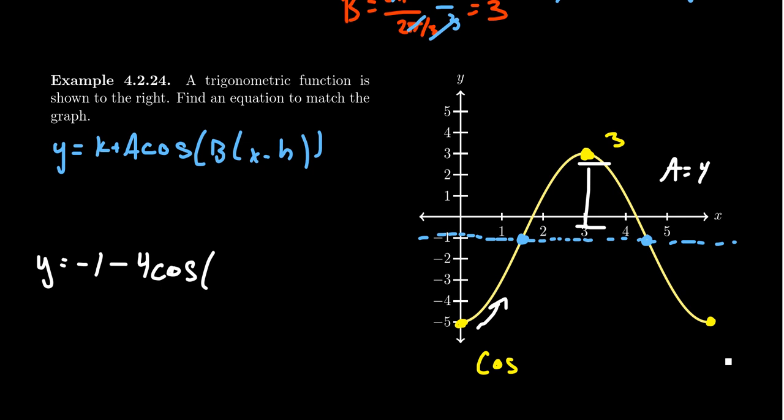We need to identify a period, which we have exactly one period listed. We can go from 0 to 6 right here. The period is 6, which if the period is 6, that means b is equal to 2π over 6. 2 goes into 6 three times, so we end up with π thirds as our coefficient b. And so then we end up putting that in there, so we're going to get π thirds x.